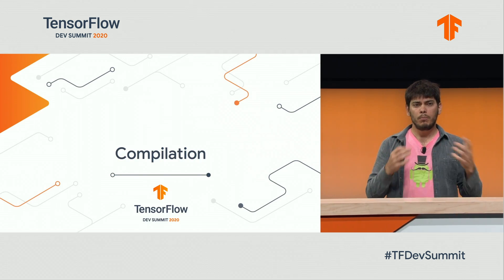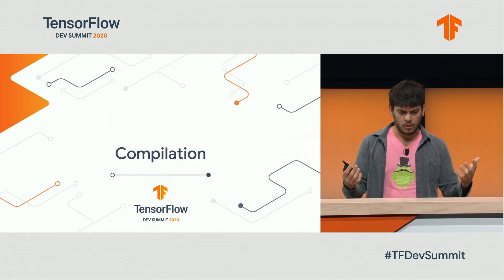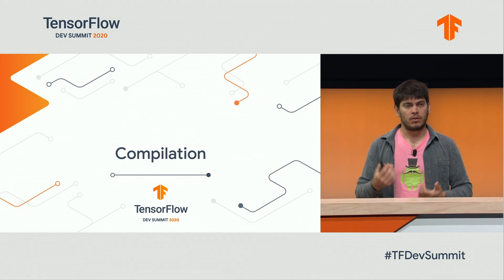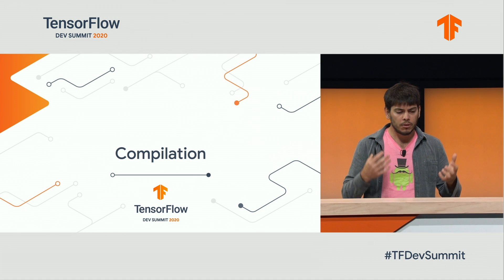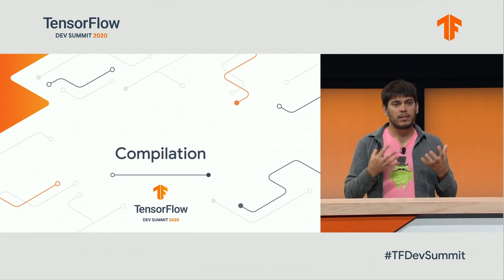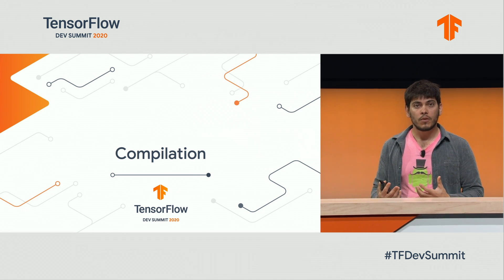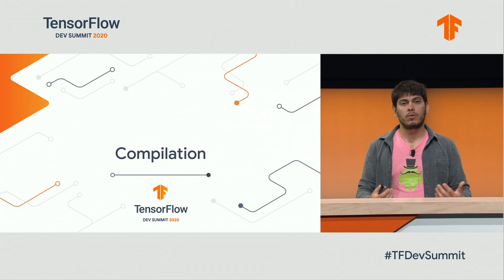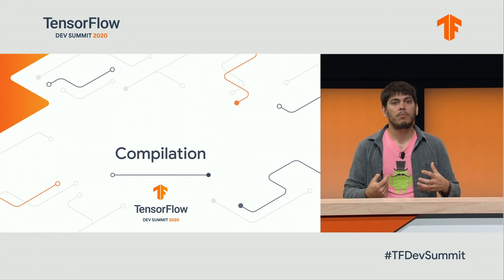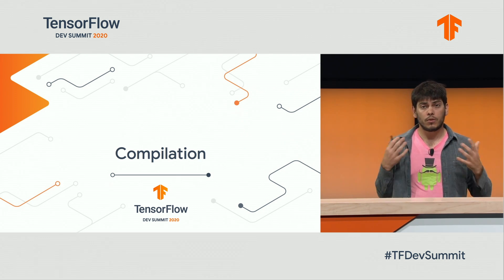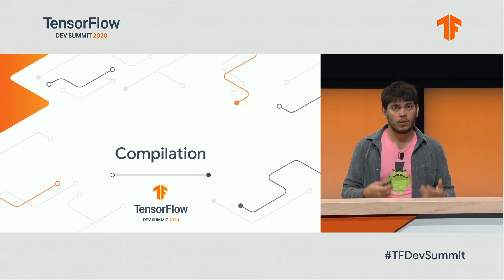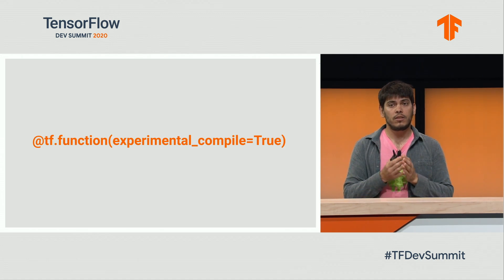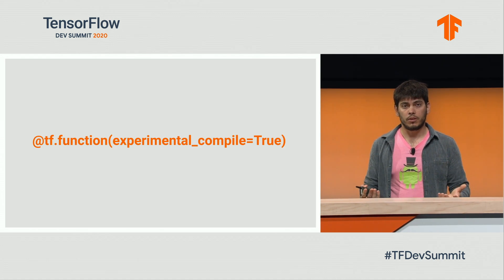A big part of TensorFlow and why we use these libraries to do research at all, as opposed to just writing plain Python code, is that deep learning is really dependent on very fast computation. One thing we're making more and more easy to use in TensorFlow is our underlying compiler, XLA, which we've always used for TPUs, but now we're making it easier to use for CPUs and GPUs as well. The way we're doing this is using tf.function with the experimental_compile=True annotation.